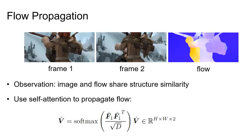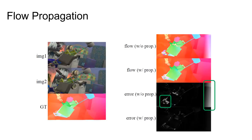To remedy this, we observe that the optical flow field and the image itself share high structural similarity. Thus, we propose to propagate the high-quality flow predictions in matched regions to unmatched ones by considering the feature self-similarity. This operation can be implemented efficiently with a single self-attention layer. With the flow propagation strategy, the error in occluded and out-of-boundary regions can be largely reduced.